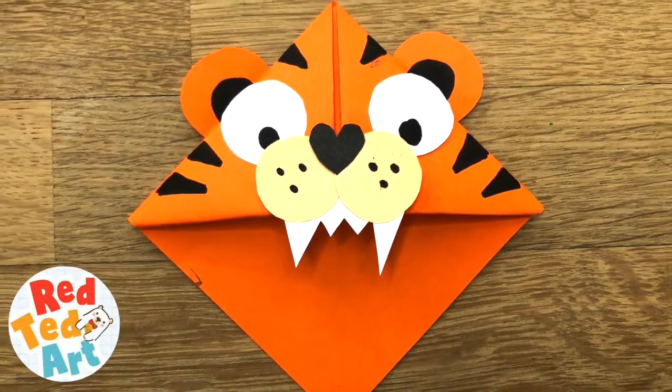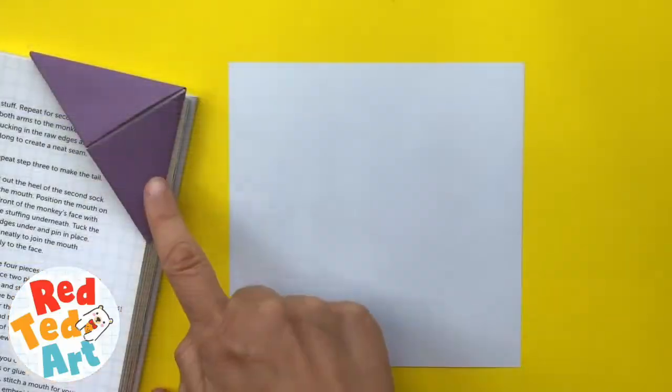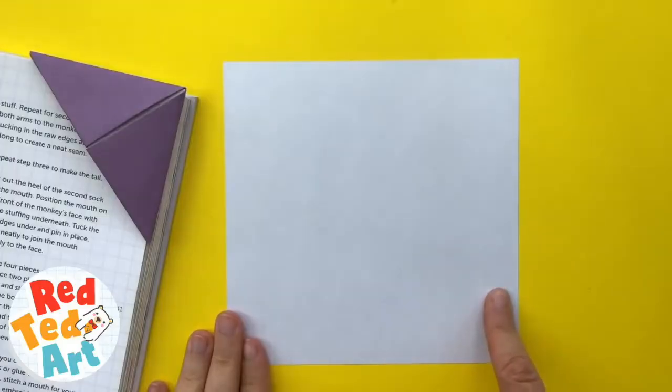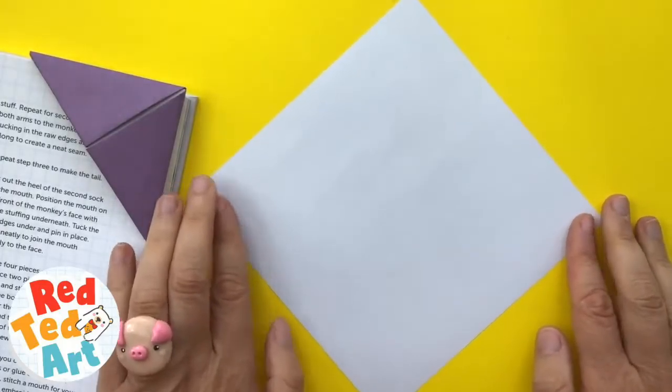Let's make an easy tiger bookmark. So what you will need is a square piece of paper. This is 15 by 15 centimeters, but it really doesn't matter.